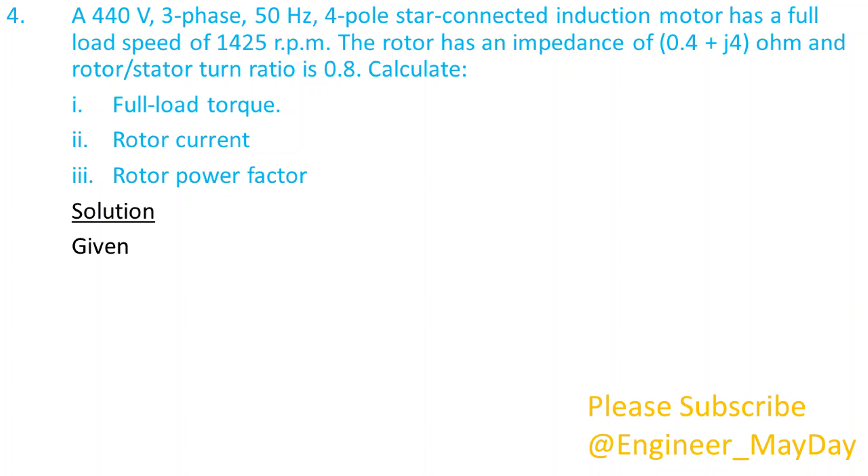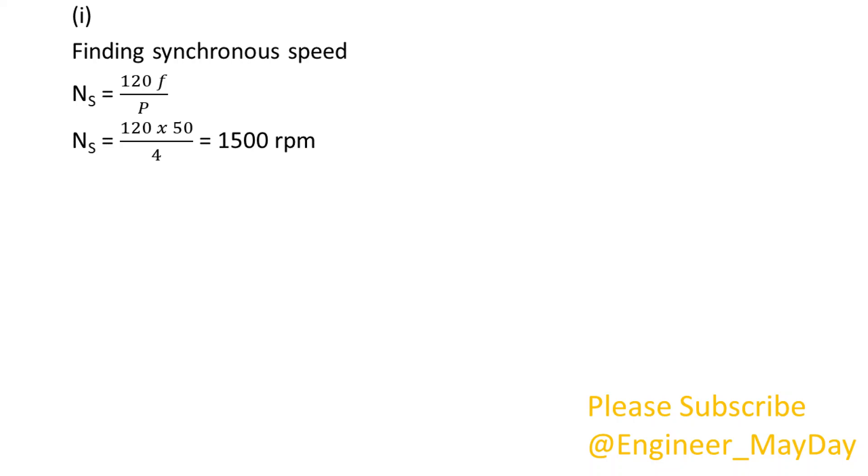Solution. Given: E equals 440 volts, F equals 50 hertz, P equals 4, N equals 1425 RPM, R equals 0.4 ohms. Finding synchronous speed: Ns equals 1500 RPM. Finding value of slip: S equals 0.05.